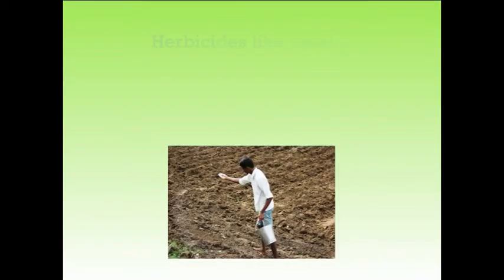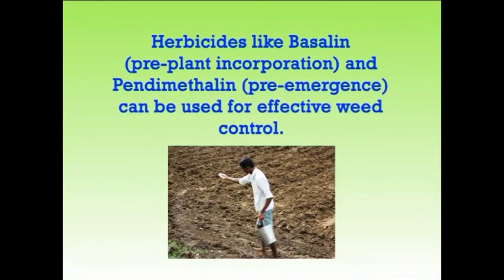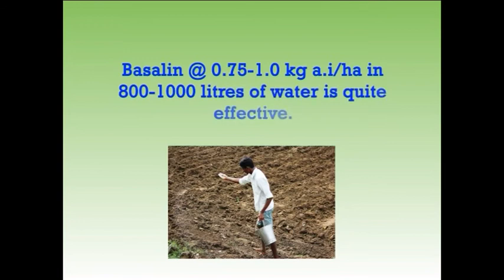Two weedings — at 30 days and 60 days after sowing — are adequate. Herbicides like Basalin, which is pre-plant incorporation, and Pendimethalin, which is a pre-emergence herbicide, can be used for effective weed control. Basalin at the rate of 0.75 to 1 kg AI per hectare in 800 to 1,000 litres of water is quite effective. Integrated weed management of any kind is better for good yield and environment.